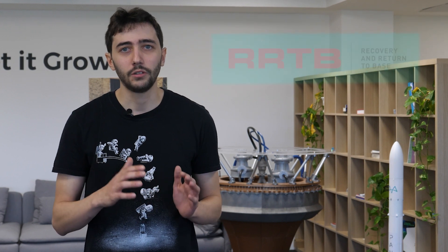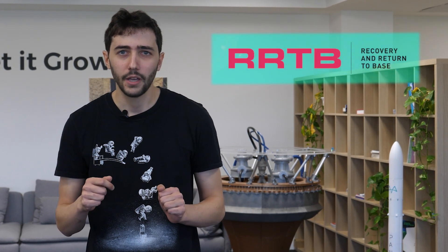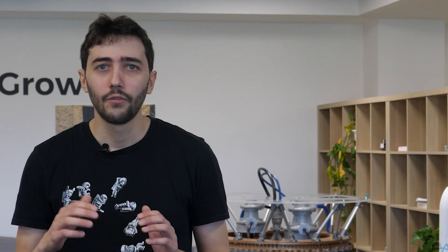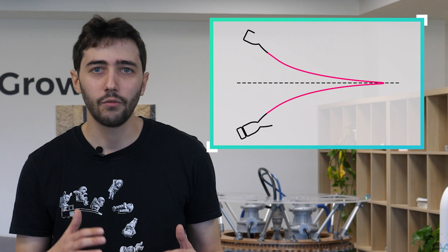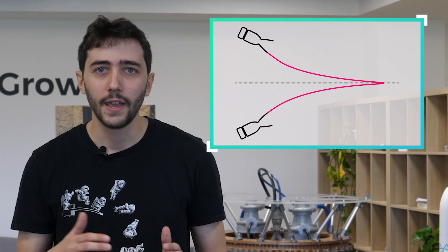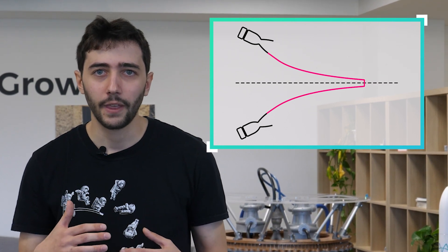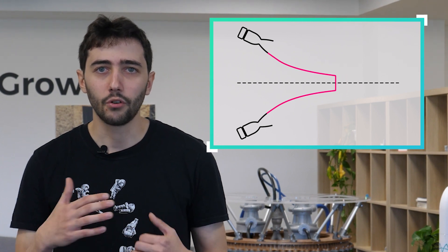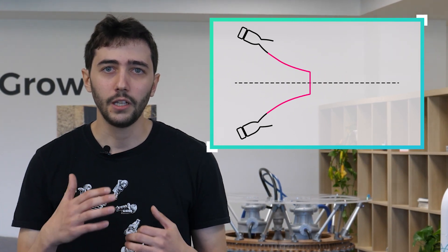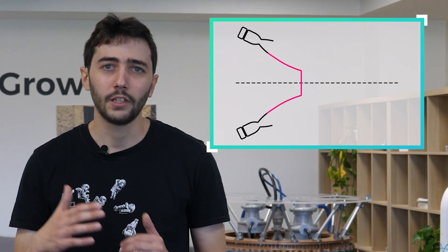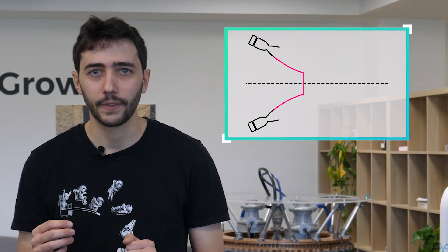We performed such an analysis as part of the H2020 RRTB project — you can find more info in the description. Furthermore, the truncation level, which is how much an ideal full-length spike is cut, can be tuned to increase the bluntness of the engine and push further away the bow shock, thus reducing heat loads, all at the cost of a few percentage points of efficiency. Ultimately, these features remove the need for a thermal protection system, which would be required for a bell nozzle.